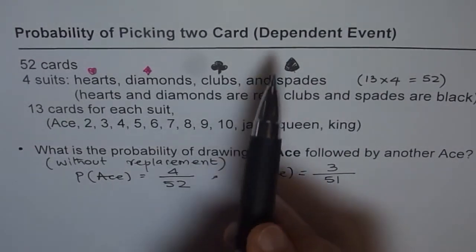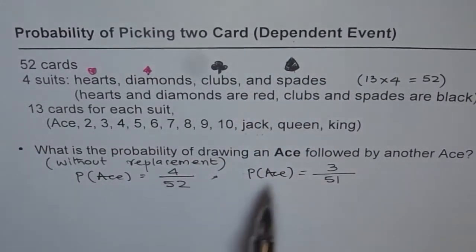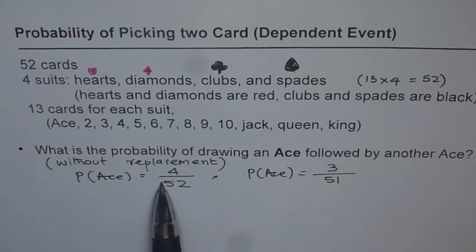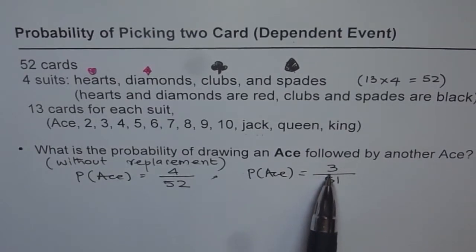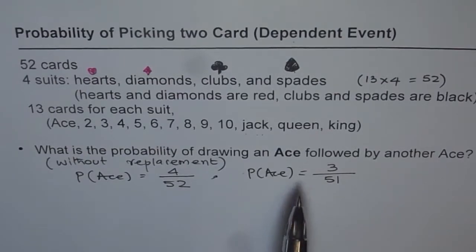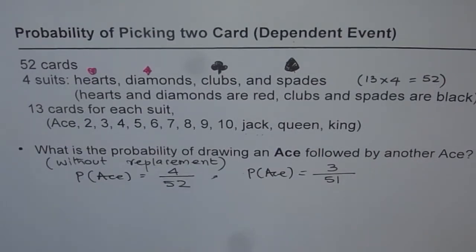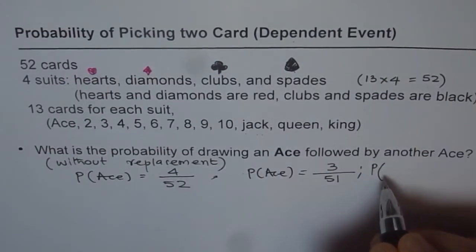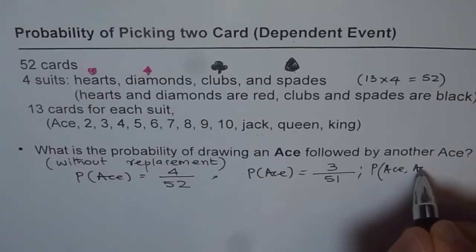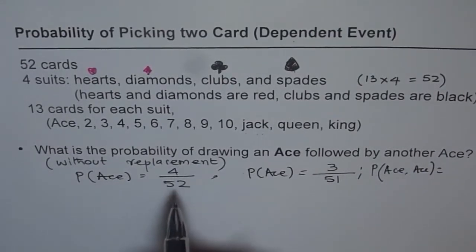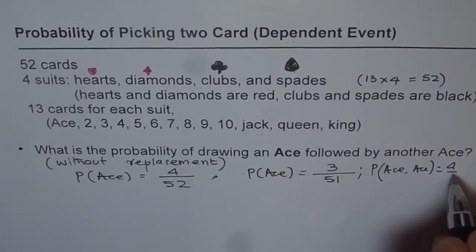And that is what we are calling dependent events. This event is really dependent on the previous one. If we have already drawn an ace, we are left with only 3 aces. Since we have already drawn a card, we are left with one less card. So the second probability of the event is dependent on the first. The probability of getting ace after ace is the product of these two.